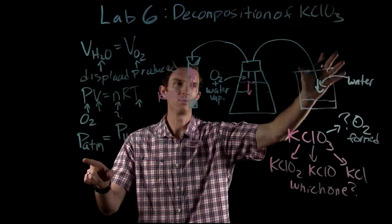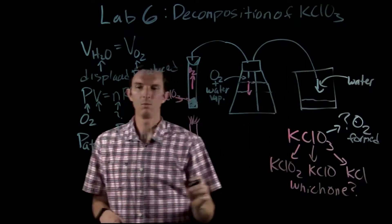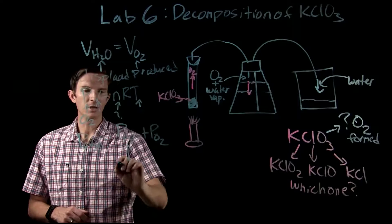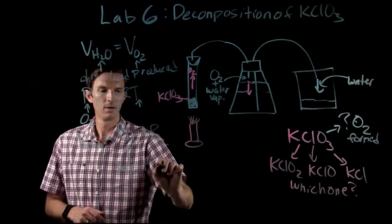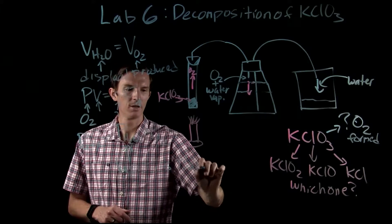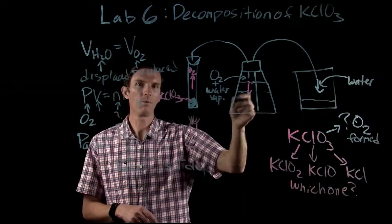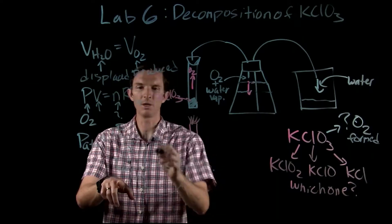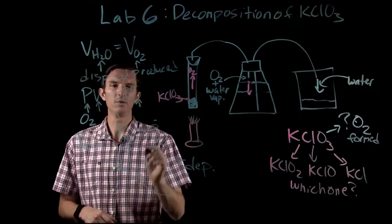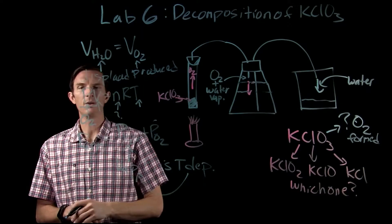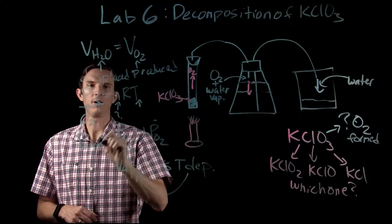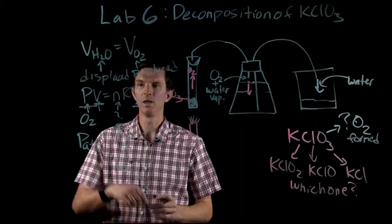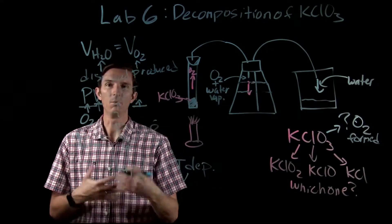We've now found the total pressure, since we know it's equal to atmospheric. The vapor pressure of water is temperature dependent, so knowing the temperature of our water tells us the vapor pressure. Once we know the vapor pressure, we can solve for the partial pressure of O2. Now we know the pressure of oxygen, the volume of oxygen, and the temperature — and with the ideal gas constant, the only unknown in the ideal gas law is the moles of gas.